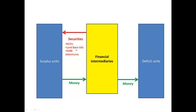Other examples include land bank bills, which are issued by the land bank, and reserve bank debentures, which are issued by the reserve bank. All of these are issued by financial intermediaries. We call this indirect financing because there is no direct contact between the deficit unit and the surplus unit — everything takes place via the financial intermediary.